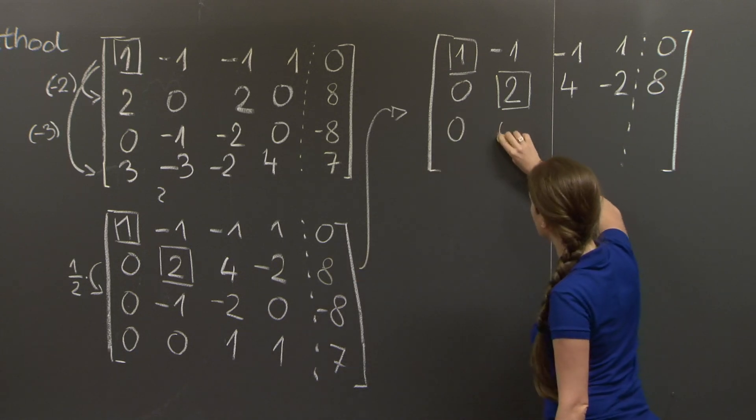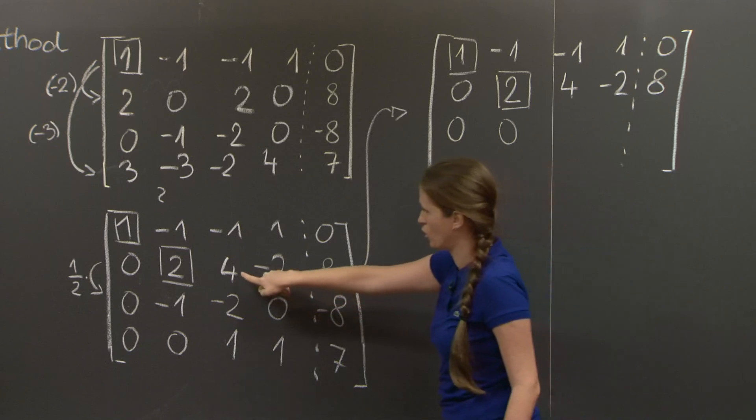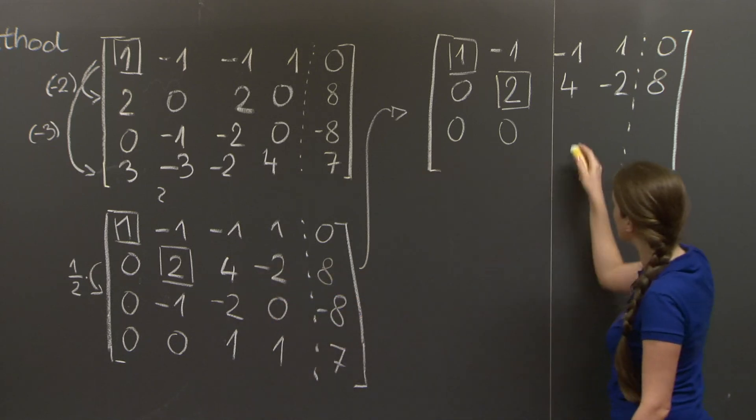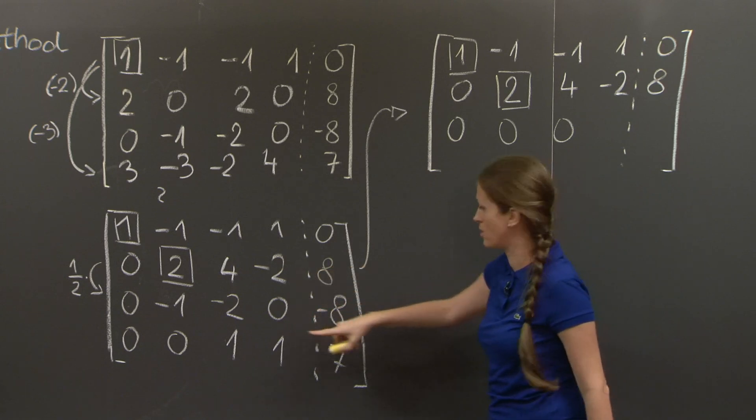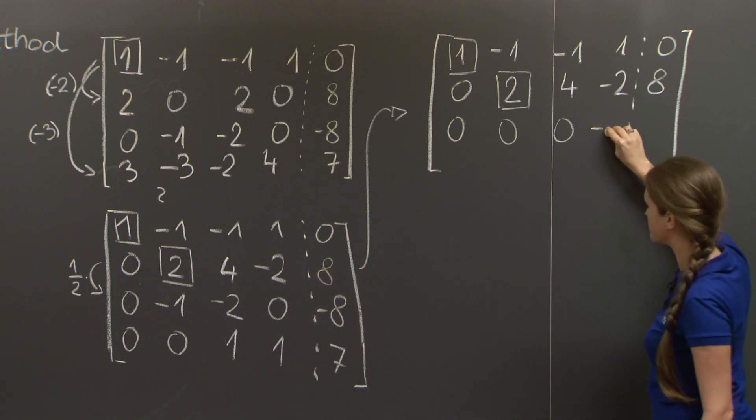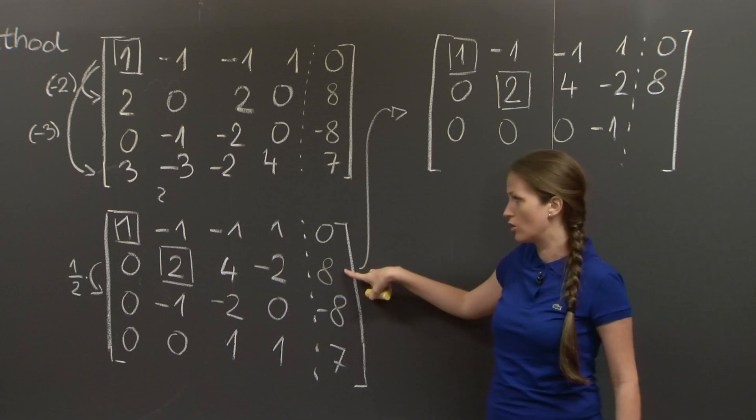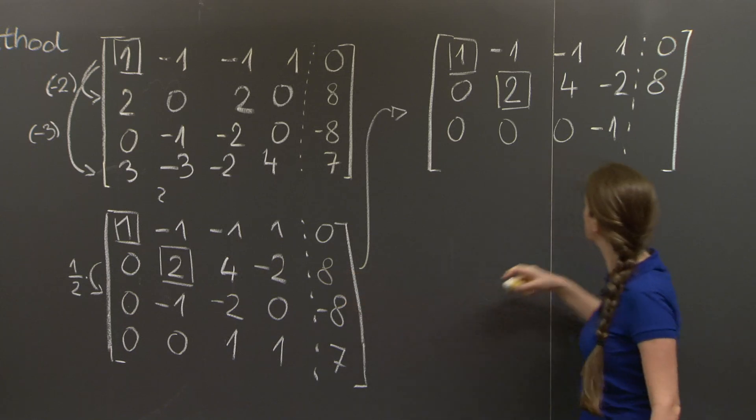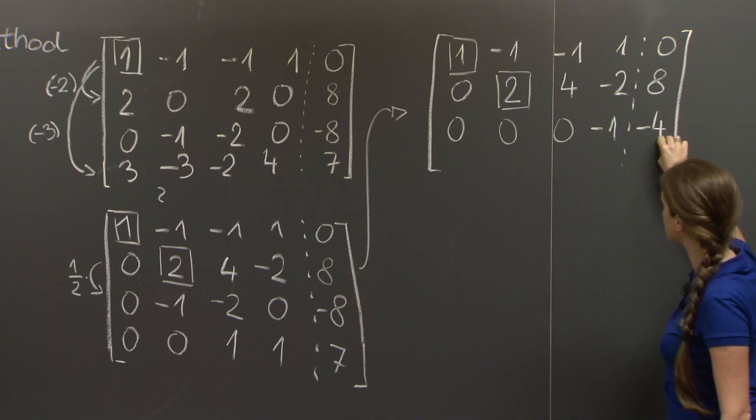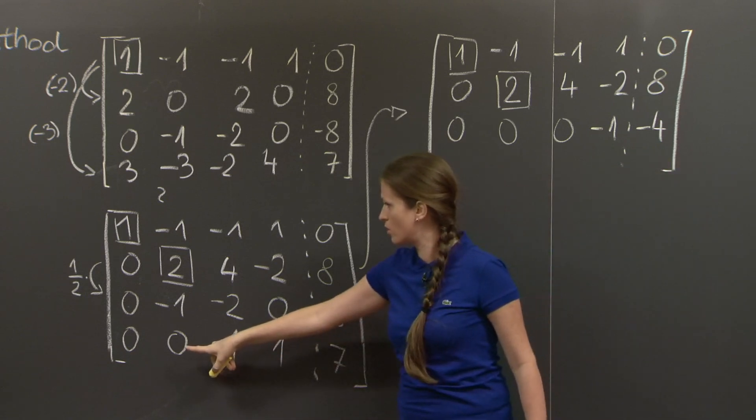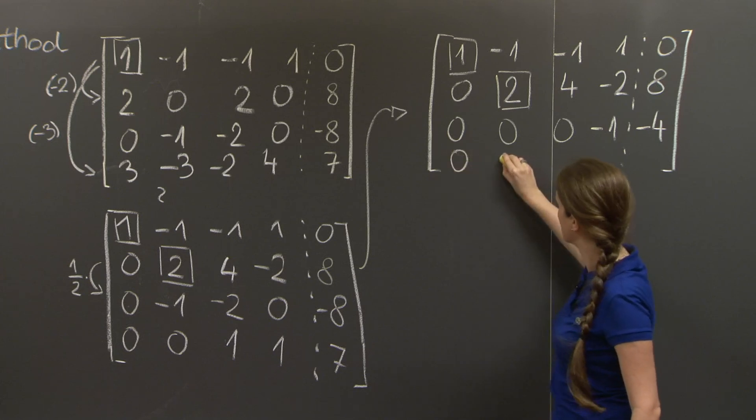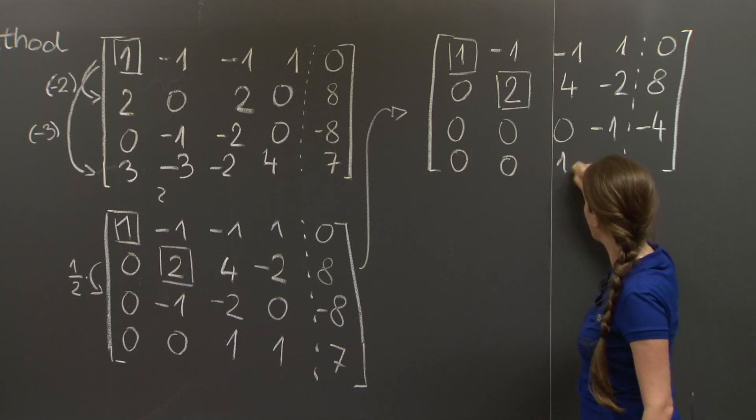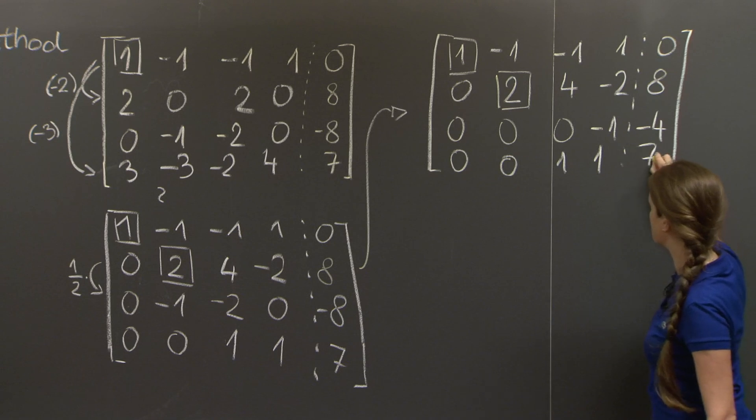The third row gets replaced by the third row plus 1 half times the second row, and becomes 0, 0. Minus 2 plus 2, which is 0. Minus 1 plus 0, which is minus 1. And minus 8 plus 4, which is minus 4. And the fourth row already has a 0 here, so I just copy it over: 0, 0, 1, 1, 7.